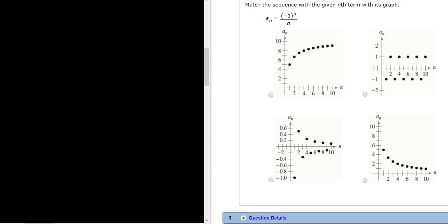Match the sequence with the given nth term with its graph. Let's go ahead and work through this. So we have a sub n is equal to negative 1 to the nth power all divided by n. So all we have to do is plug in numbers and see if we can find the right graph.